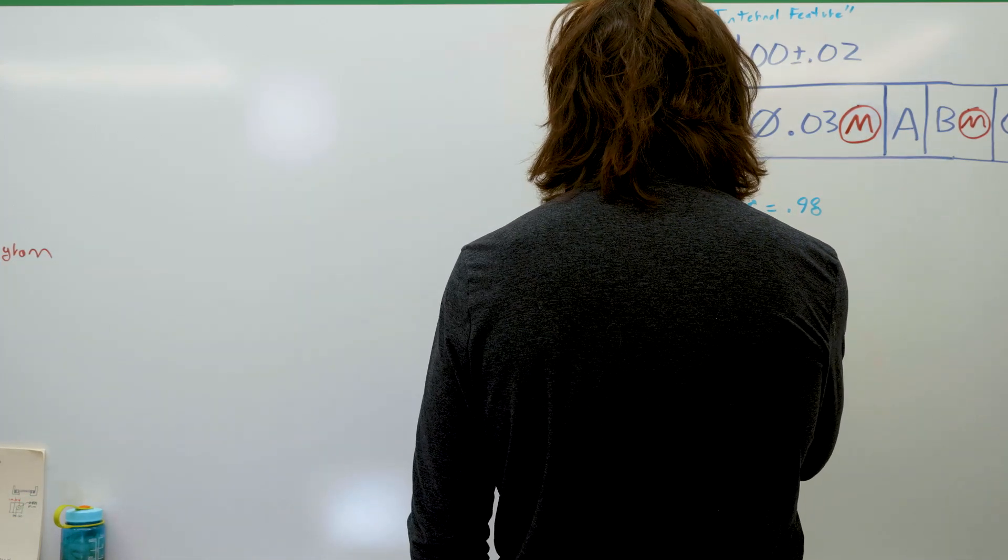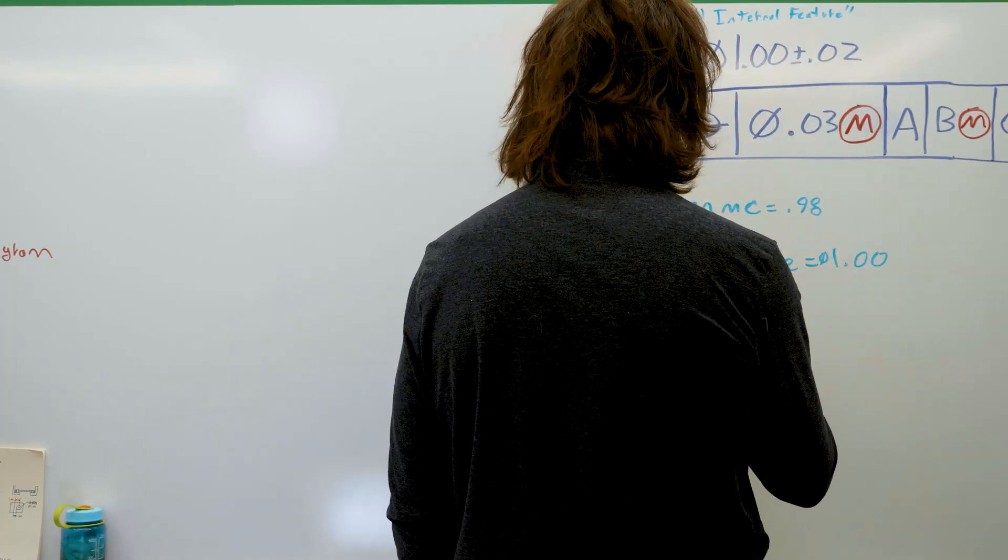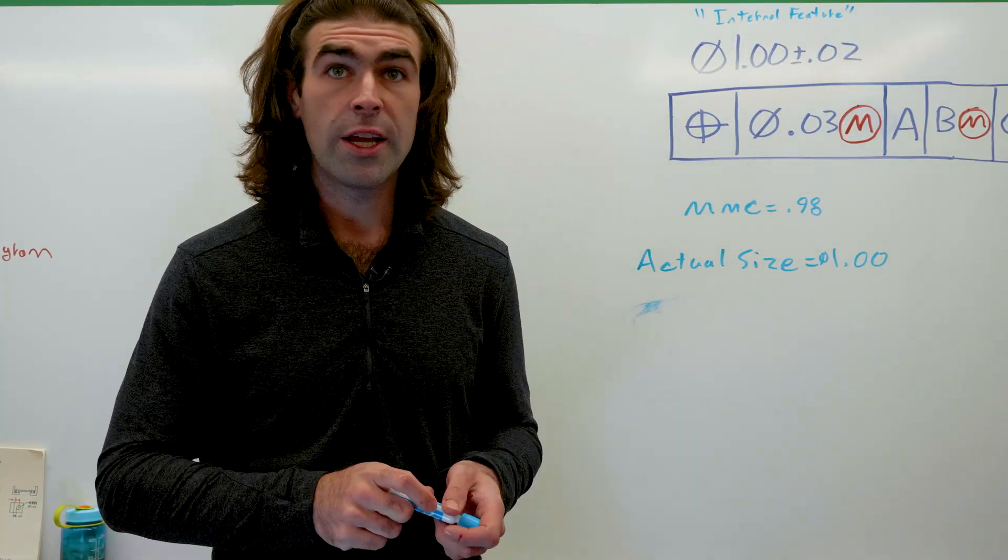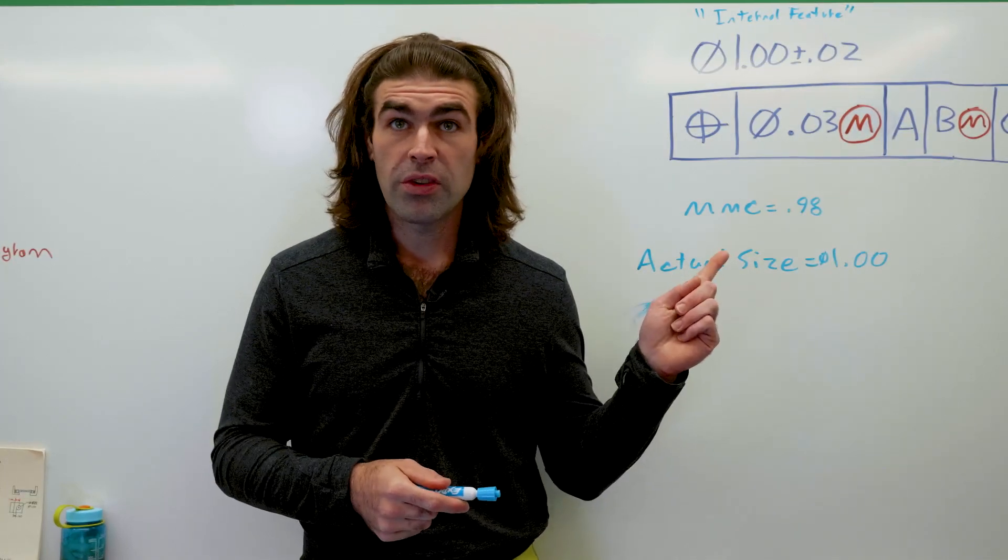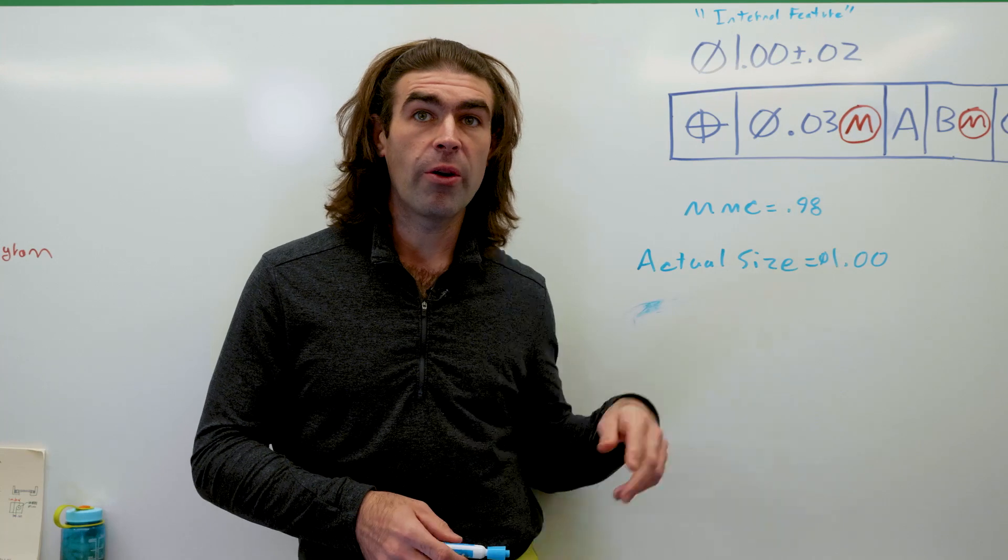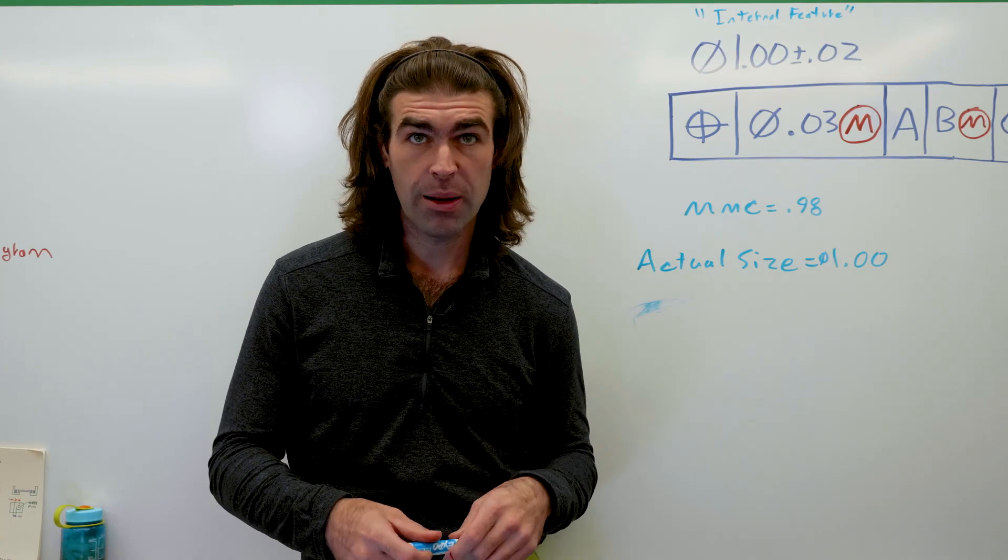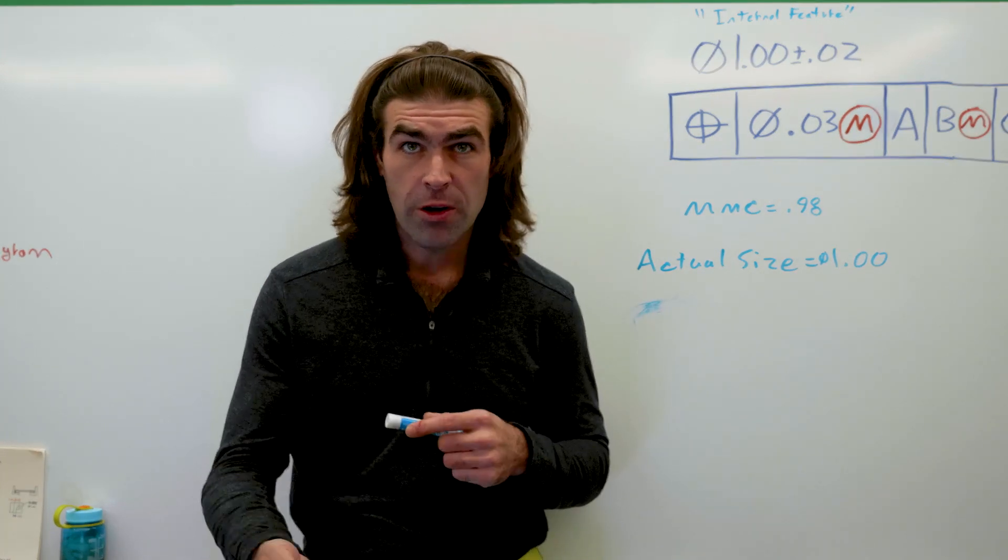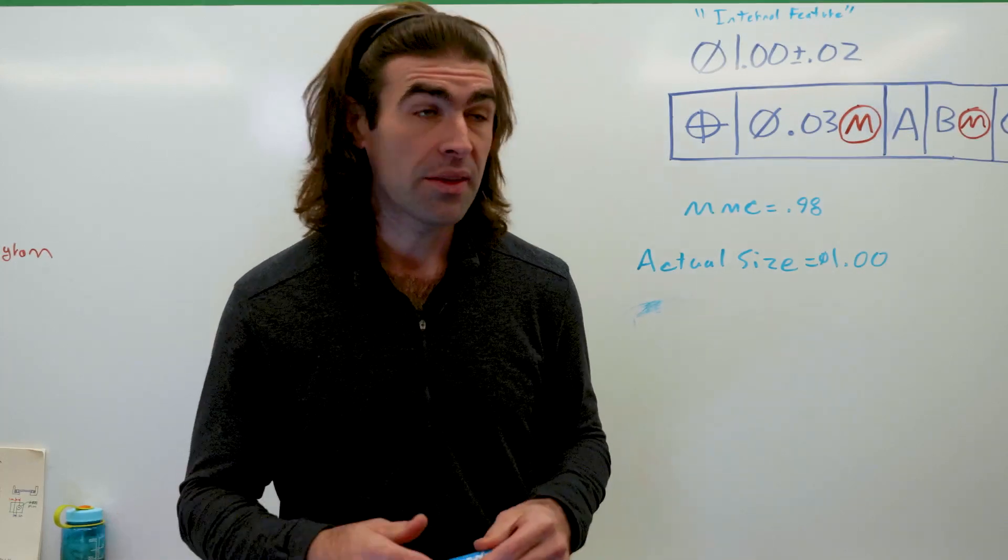So let me show you what that looks like. Say the hole comes in at one inch. You can subtract that from the MMC. You get 0.020. You can add that to what's already in the feature control frame. Now let me show you with a chart. This is the way I like to illustrate this concept.